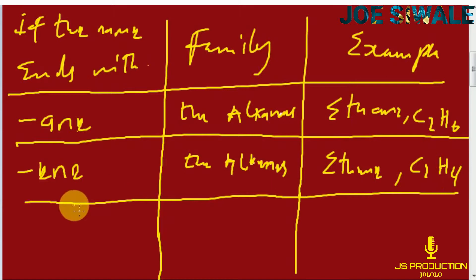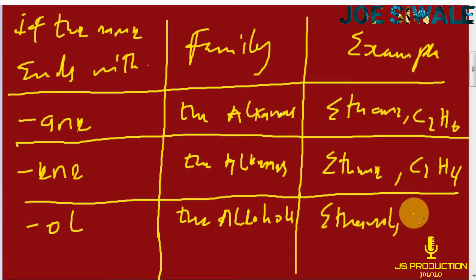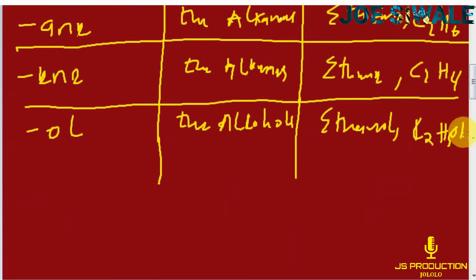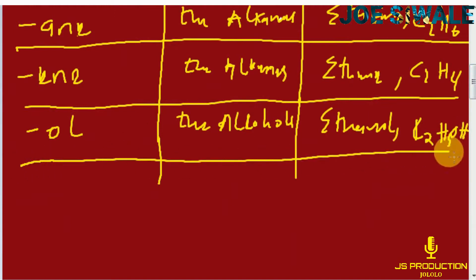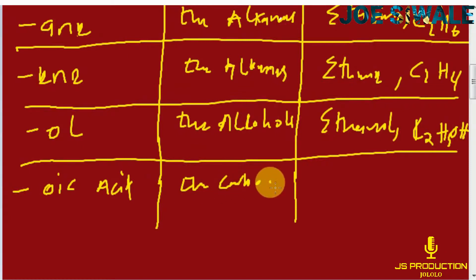If the name ends with -OL, that means it belongs to the alcohols. An example is ethanol, and the formula for ethanol is C2H5OH. If the name ends with -OIC and the word acid, that means it belongs to the carboxylic acids, and an example is ethanoic acid.